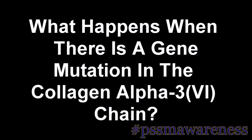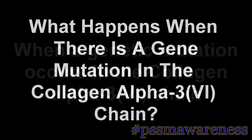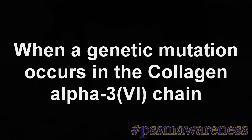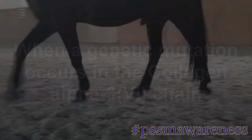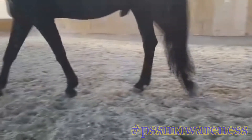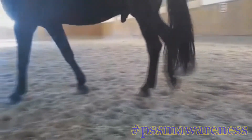What happens when there is a gene mutation in the collagen alpha 3 chain? When a genetic mutation occurs in the collagen alpha 3 chain, the degenerative nature of the myopathy will weaken muscles over time.